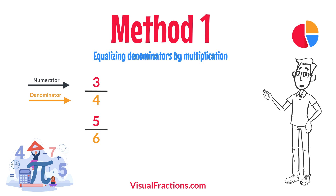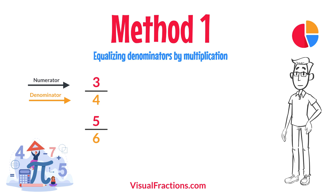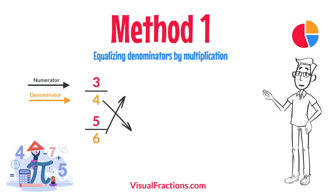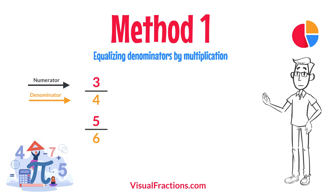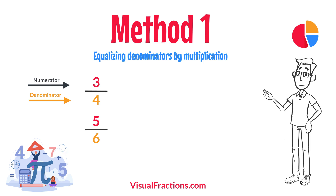First, let's equalize the denominators by multiplying each fraction's numerator and denominator by the other fraction's denominator. This method works by using the denominators of each fraction to create a common denominator, allowing us to compare the fractions directly.